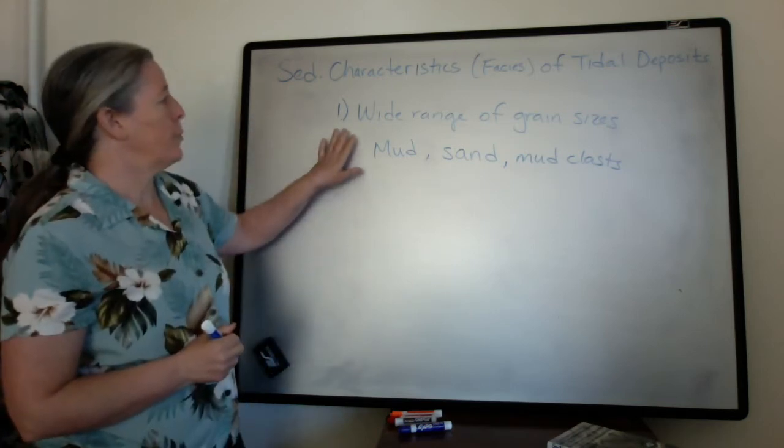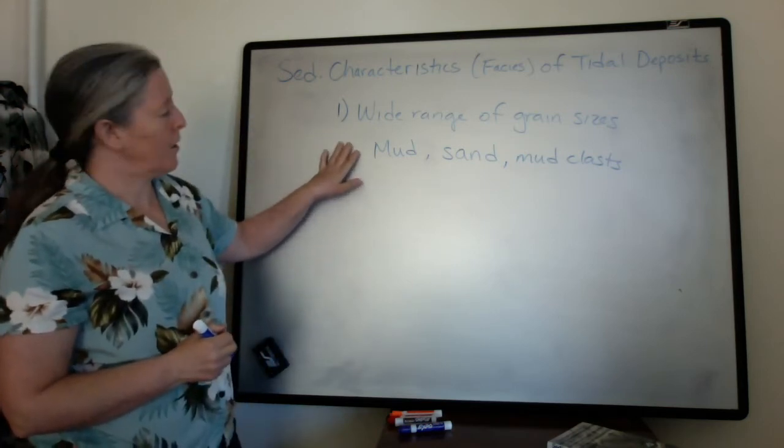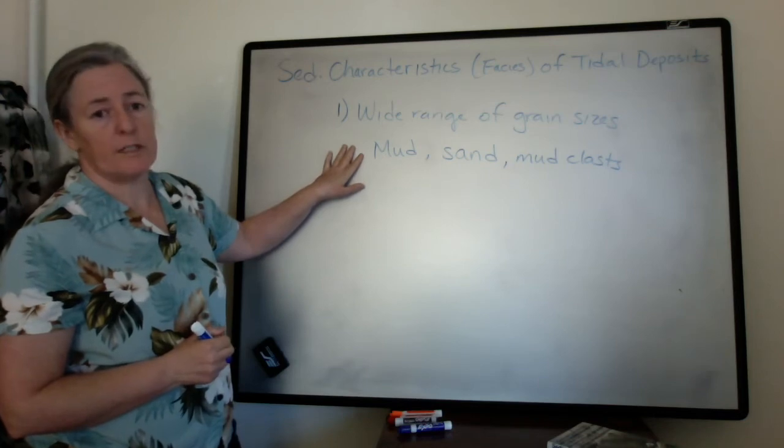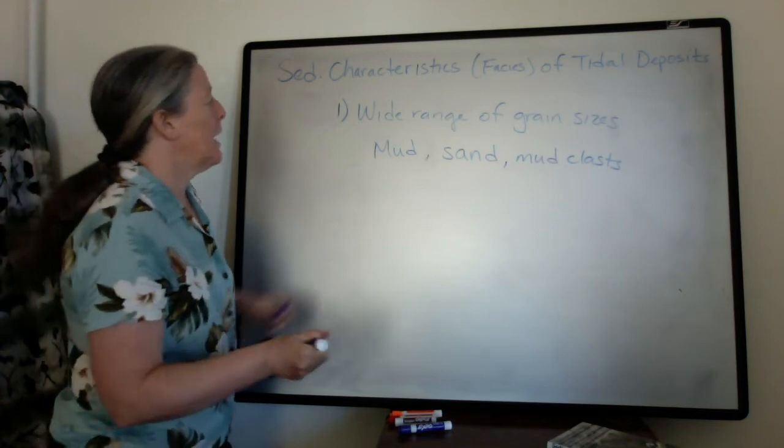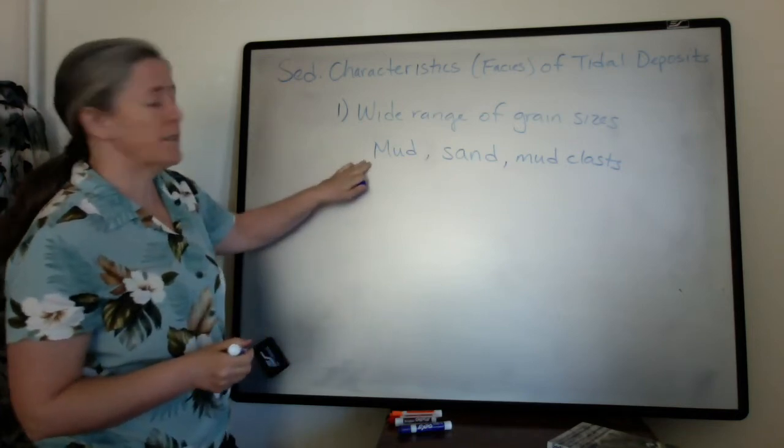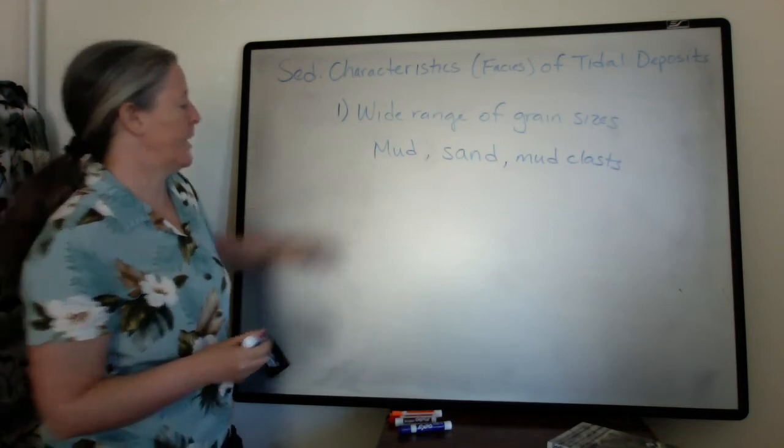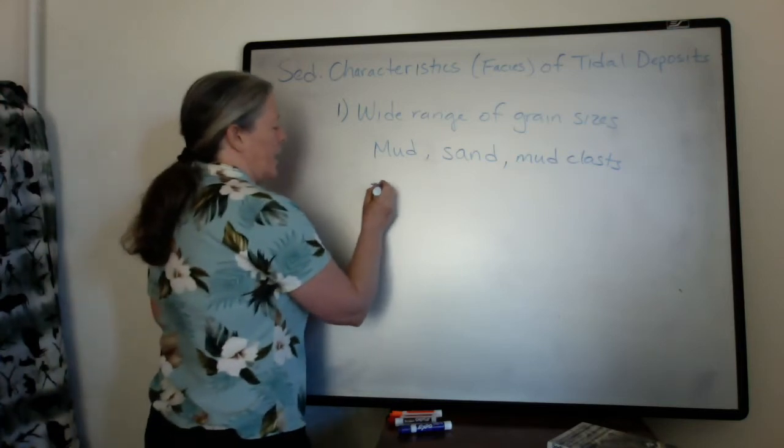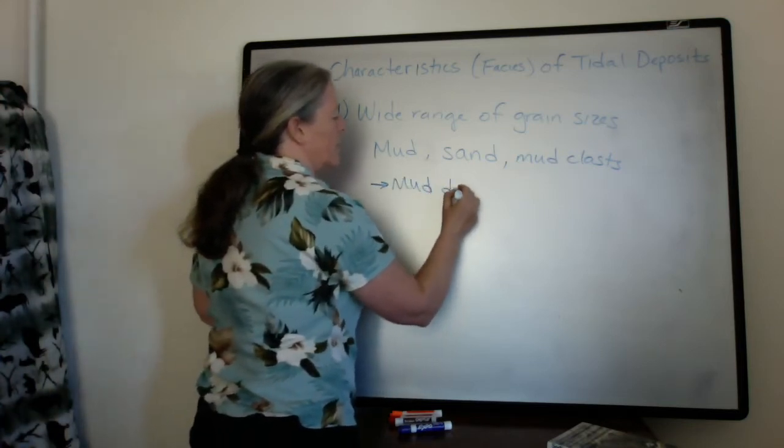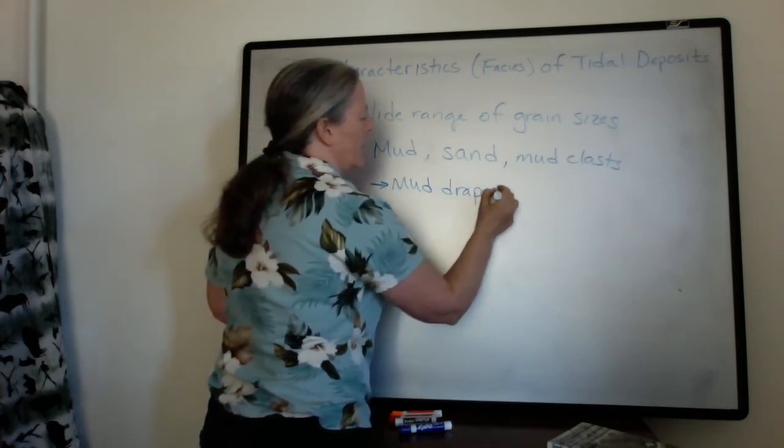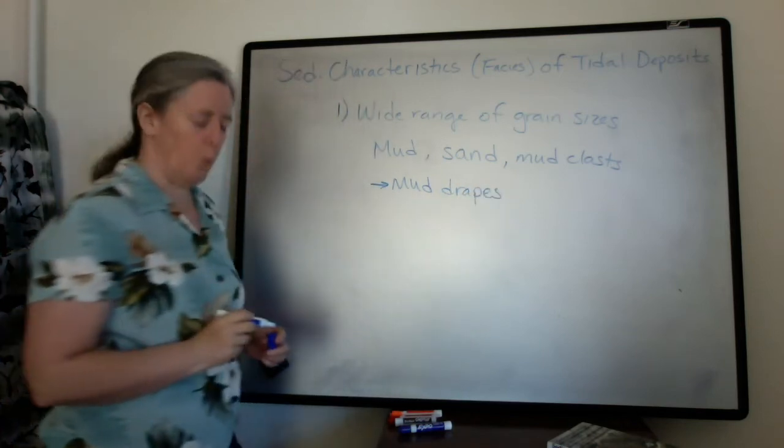So the wide range of grain sizes, their deposition is separated in time by the duration of the tides. And it produces a distinctive sedimentary characteristic where you have mud drapes that can be mixed in with sand that's deposited in ripples or dunes.